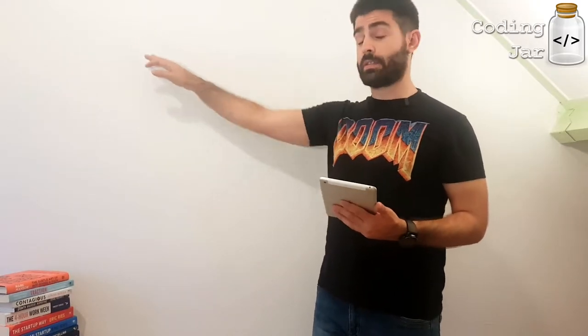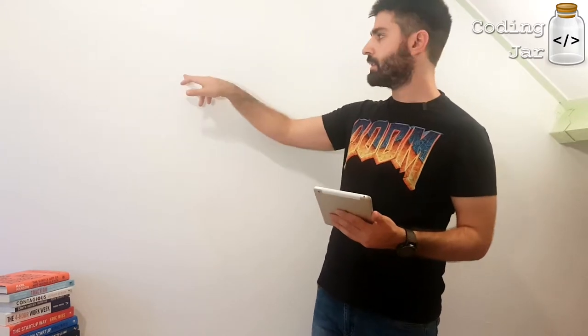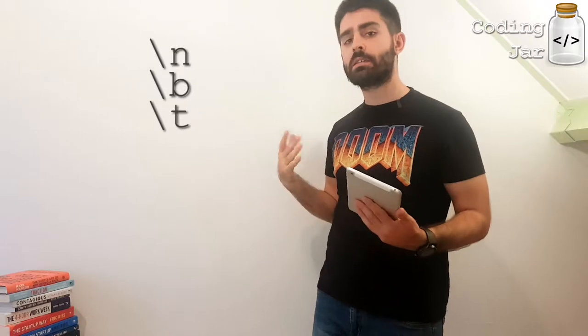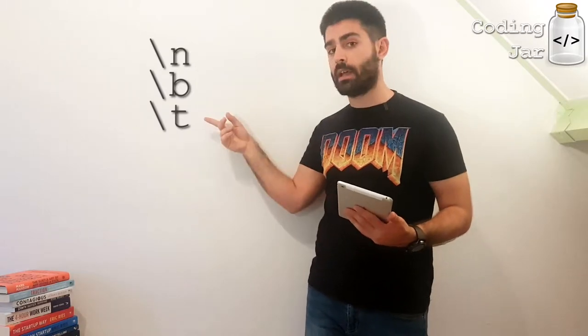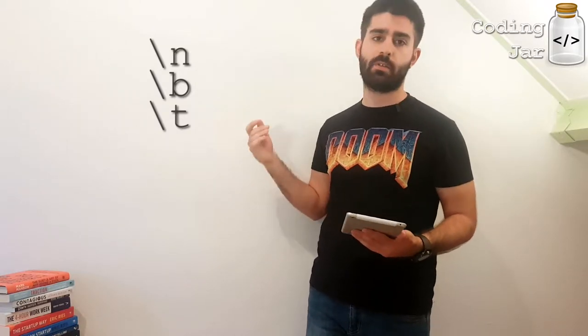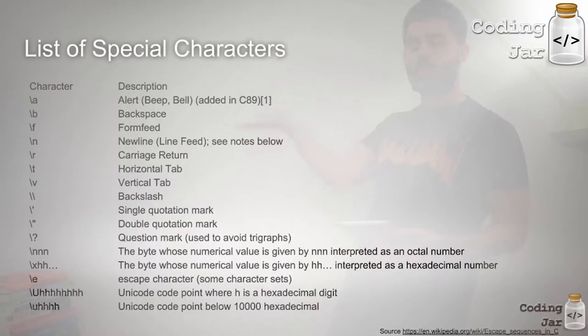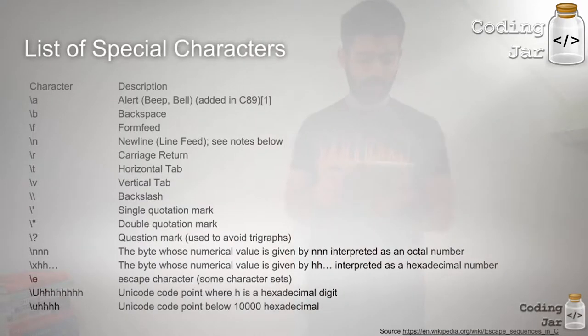So special characters start with a slash character and then something else. So for instance, slash n for a new line means start a new line, go to the next line. Slash b means backspace. Slash t means tab character. Here is a list of all special characters. I think that slash a, slash b, slash n, and slash t are the most important ones.